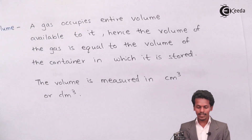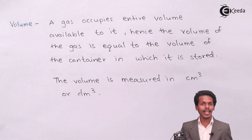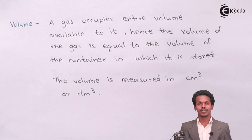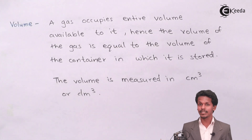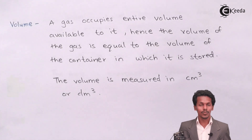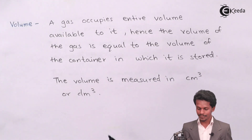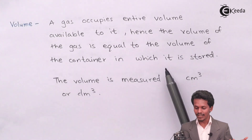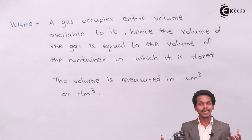Now talking about the next property, that is volume. A gas occupies the entire volume available to it. For example, suppose in a very huge room if you insert a few gas molecules, those gas molecules will occupy the overall space present in the room — it will occupy the whole volume of that room. Hence, the volume of the gas is equal to the volume of the container in which it is being stored.